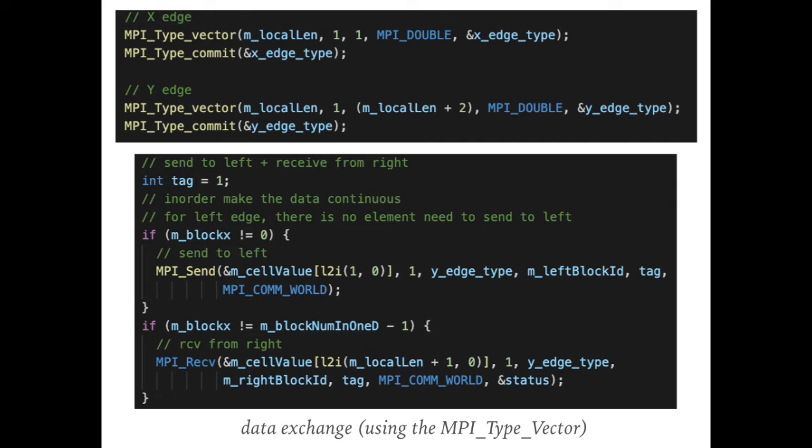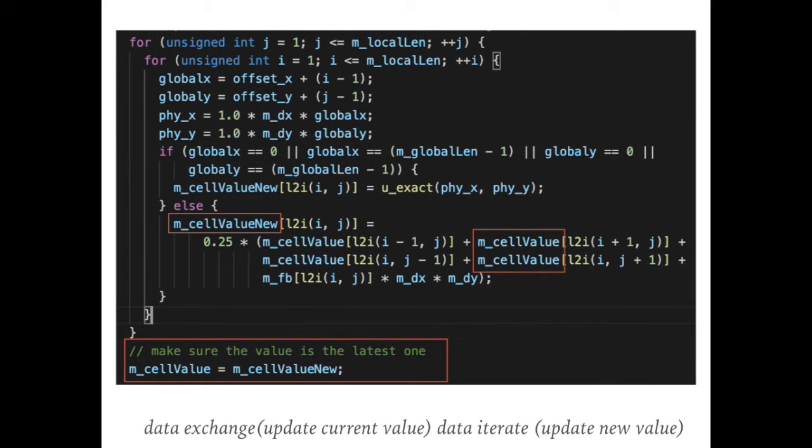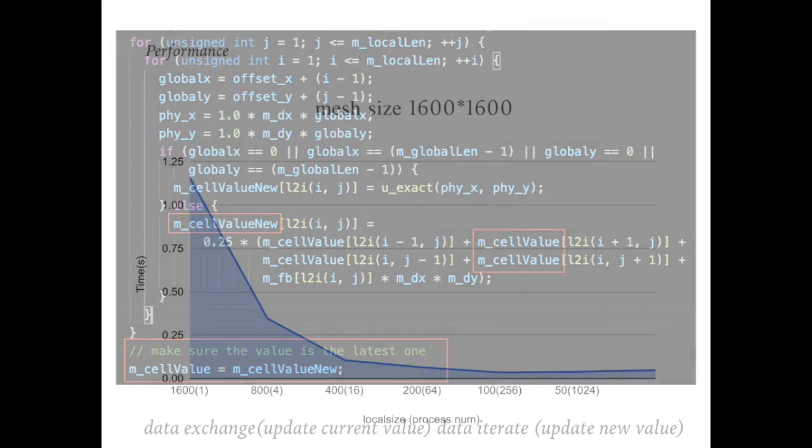It is worth noting that the step of data exchange is always the first thing in iteration. After this step, the ghost value included in the cell value array is updated. Then, we can use the cell value to update the new cell value. Then, when every element is updated, we can copy it to the original cell value array.